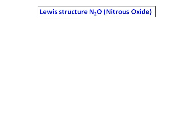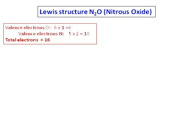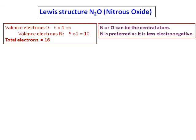First, let's draw the Lewis structure of nitrous oxide, N₂O. Count the total number of valence electrons: 6 from oxygen and 10 from nitrogen, giving a total of 16. In N₂O,